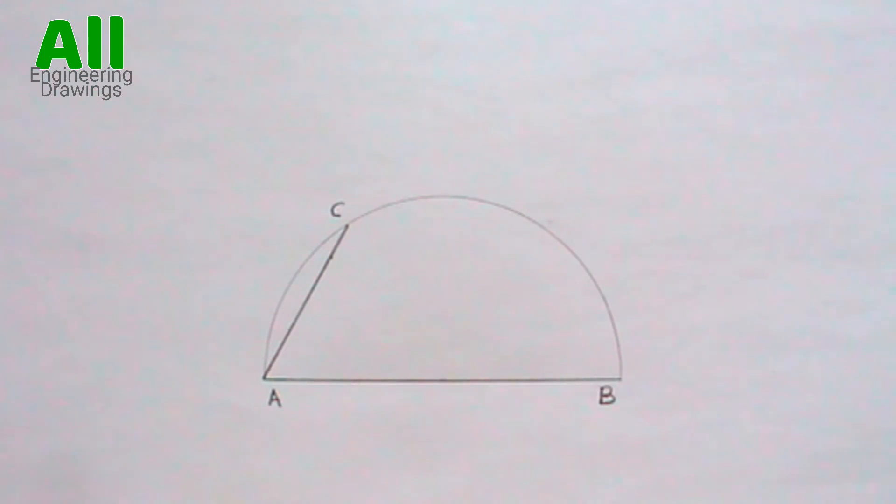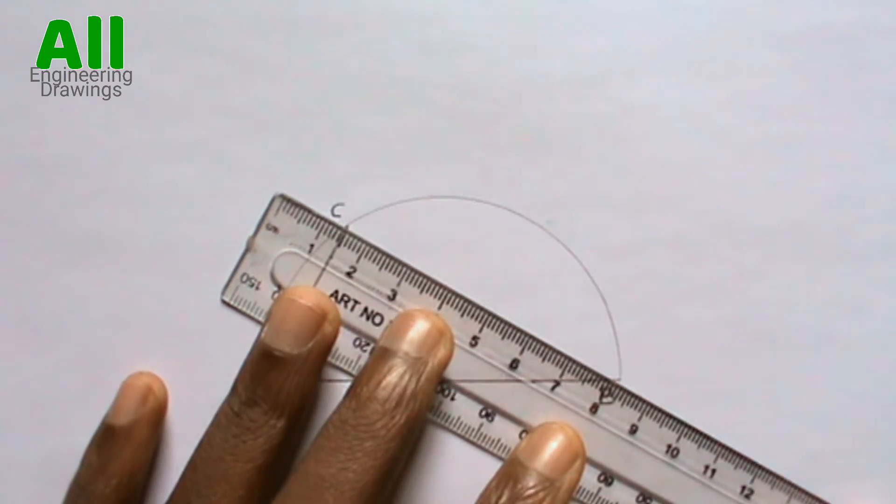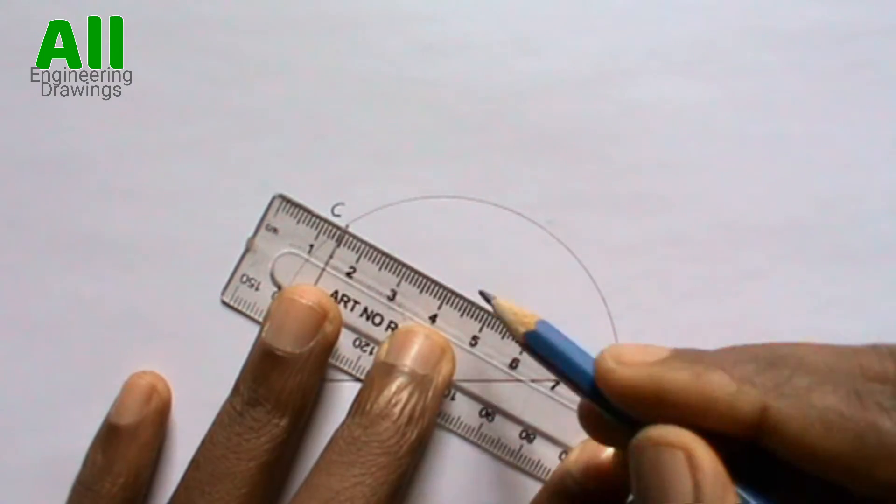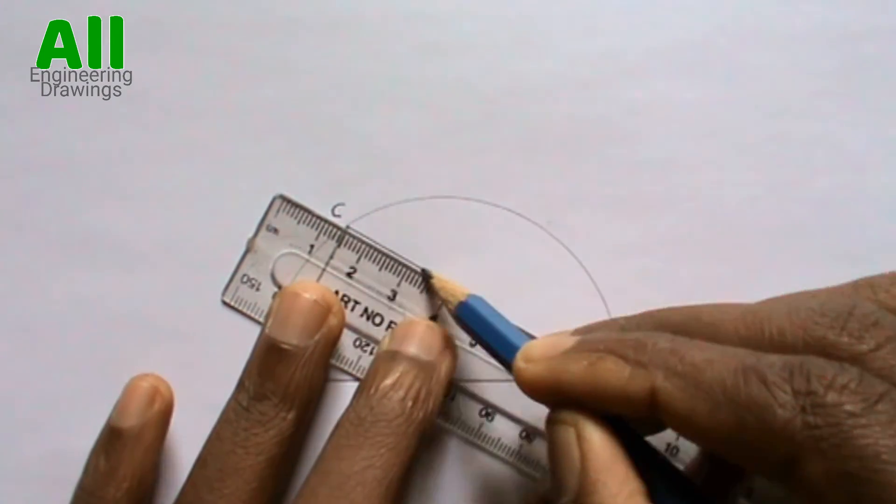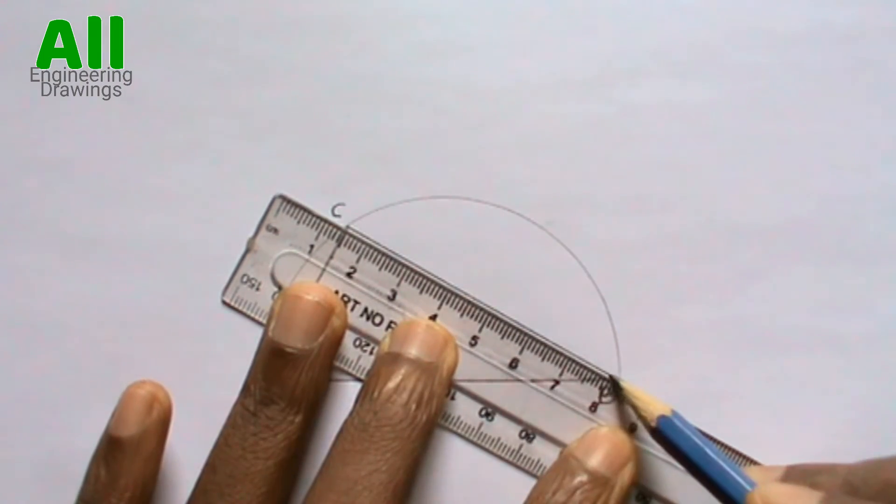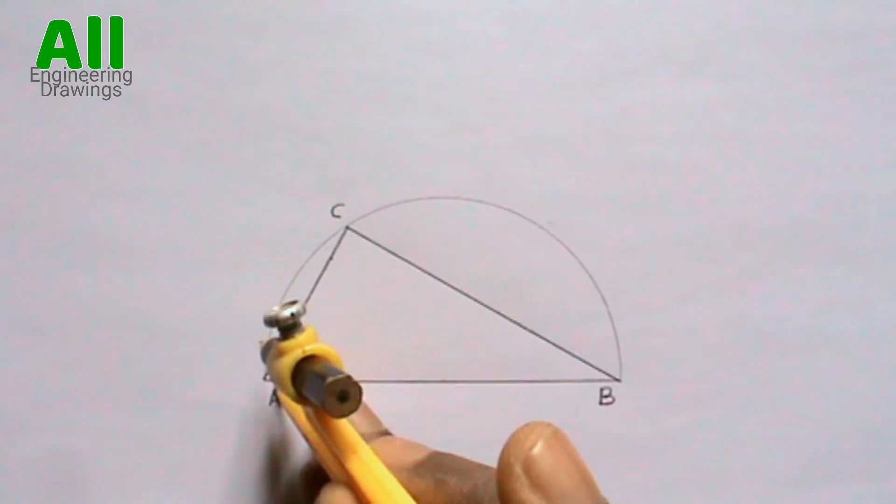Now draw a line joining point C and point B. The triangle has been drawn successfully. You can indicate your angle.